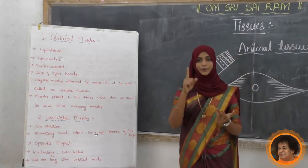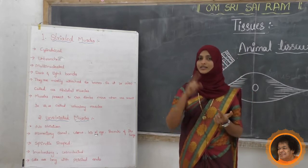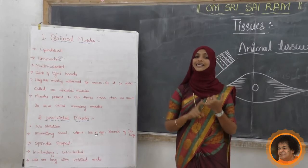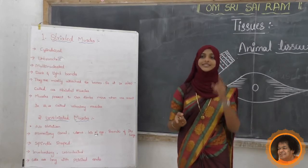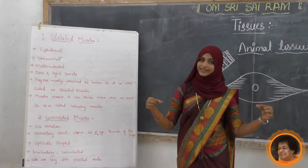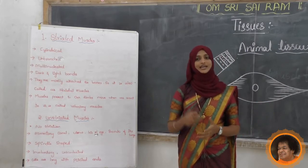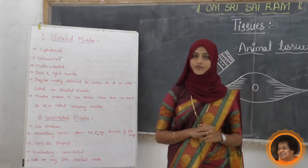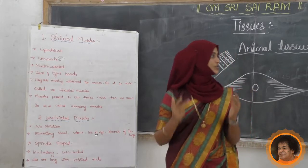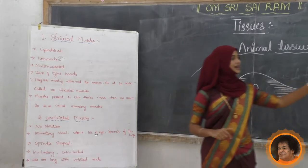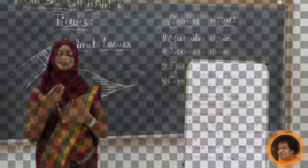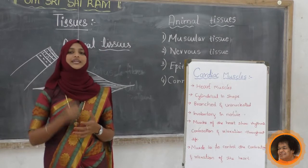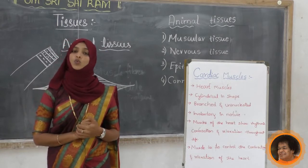To summarize unstriated muscles: no striations present, found in alimentary canal, uterus, iris, and bronchi of the lungs. No branches, uninucleated, spindle shape, with pointed ends. Unstriated muscle is also called smooth muscle - since it does not have any branches or striations, it is very smooth.